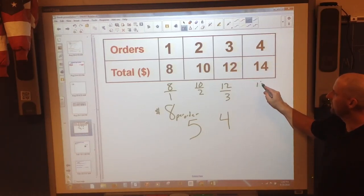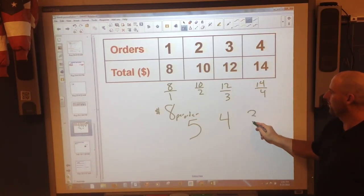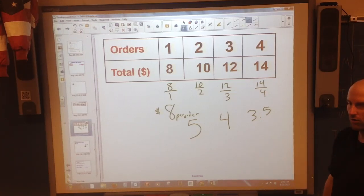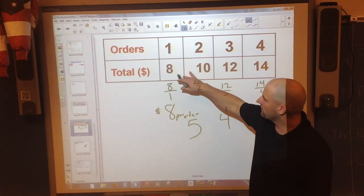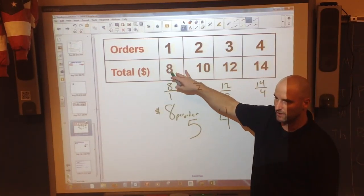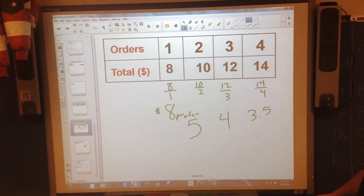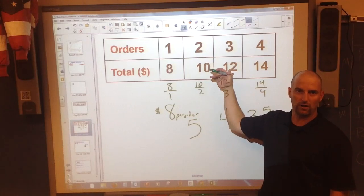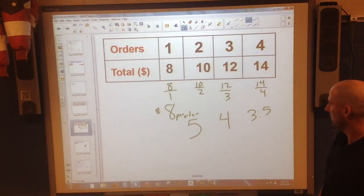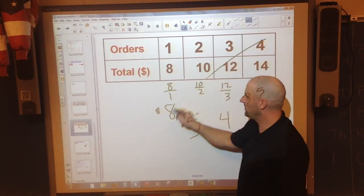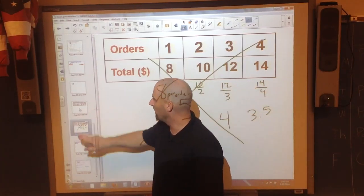And I put 14 over 4, and I end up with $3.50 per order. So although it looked organized as far as horizontally and additionally, it is not proportional because proportional really isn't an addition concept, it's a multiplication concept. So not proportional would be my answer on that. Let me show you another one.